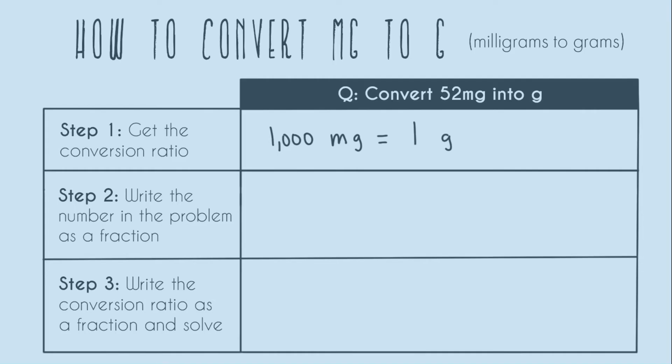Step two: write the number in the problem as a fraction. So the number we're trying to convert is 52, and we want to write that as a fraction by adding a fraction bar and a denominator of one. And now we also want to make sure that we include the unit. Milligrams (mg) is on the numerator just as much as 52 is, and so this is important for canceling out later.